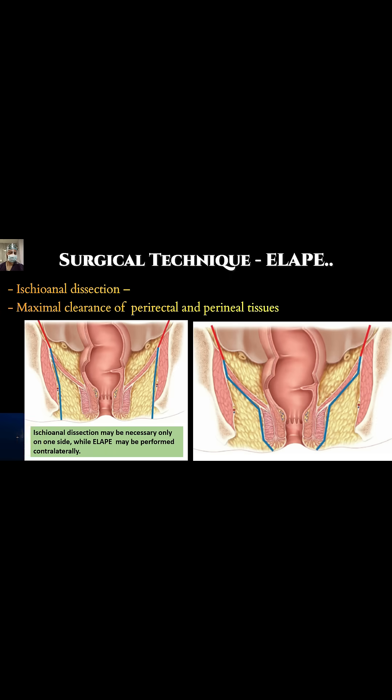We take out the whole pad of fat. There are two pictures here — on the right side is the ischioanal dissection and on the left side is the ELAPE.